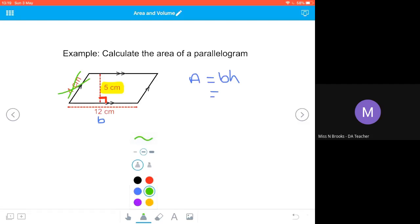So this is my height here, the five centimeters. So I'm going to substitute that in, so area equals 12 multiplied by 5, and that gives me 60, and my units were centimeters, so my area will be 60 squared centimeters.